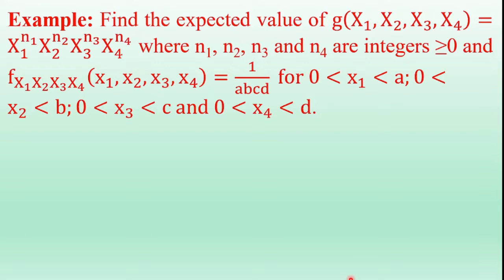The example is: find the expected value of the function g(x1, x2, x3, x4) = x1^n1 * x2^n2 * x3^n3 * x4^n4, where n1, n2, n3, and n4 are integers greater than or equal to 0. The joint density function of random variables x1, x2, x3, and x4 is 1/(abcd), for x1 from 0 to a, x2 from 0 to b, x3 from 0 to c, and x4 from 0 to d.